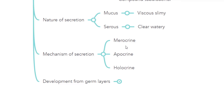In the merocrine gland, the cell remains intact but only the secretion is released in the form of secretory vesicles which go to the cell membrane, merge with it, and are then released outside the cell. In the apocrine gland, the apical portion of the cell is pinched off along with the secretory portion and released as the secretion. In the holocrine gland, the whole cell disintegrates and forms part of the secretion.